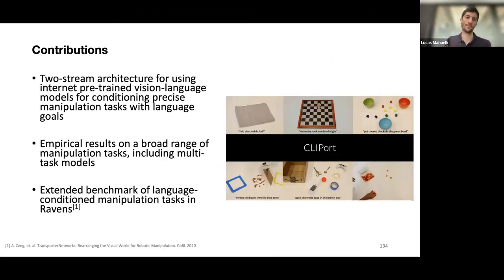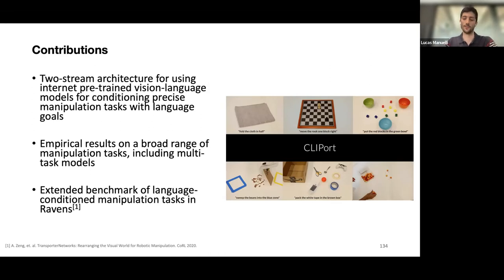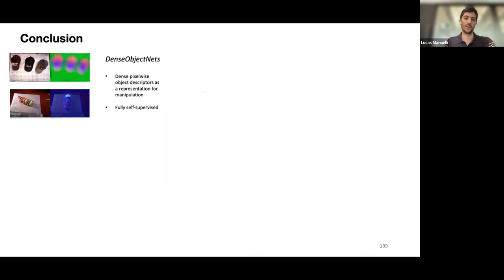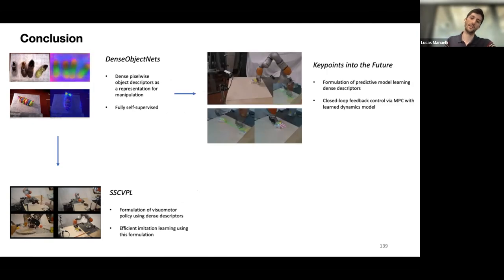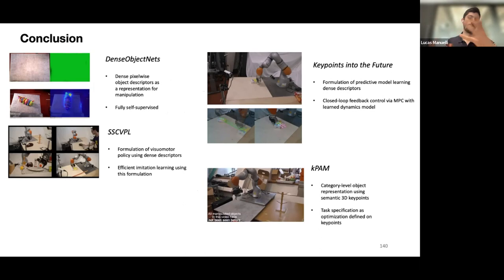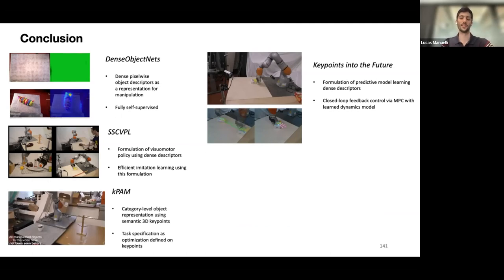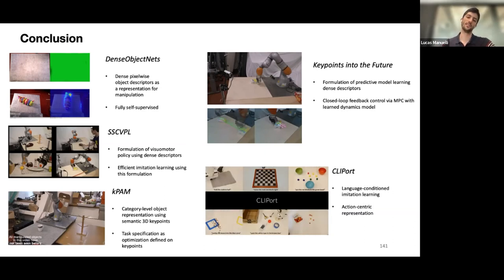To wrap up CLIPort: it's a two-stream architecture for using internet-scale pre-trained vision-language models for conditioning precise manipulation, with lots of empirical results along with an extended benchmark of language-conditioned manipulation tasks in the Ravens framework. In summary: we showed Dense Object Nets, a dense pixel-wise representation used in imitation learning and model-based RL. KPAM was a different way, using supervised learning to represent categories of objects. Those were all firmly in the object-centric world. Finally, CLIPort is an action-centric approach for language-conditioned imitation learning. I want to thank my collaborators, especially Pete, who I worked with on many of these papers, and Mohit, who is the lead author on CLIPort along with Dieter.